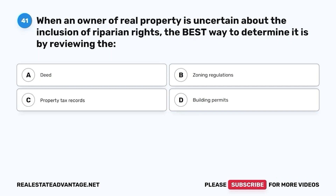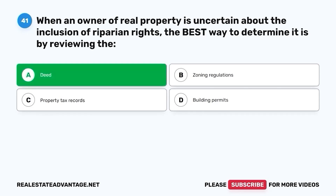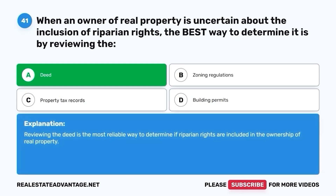Question 41. When an owner of real property is uncertain about the inclusion of riparian rights, the best way to determine it is by reviewing the: A. Deed. B. Zoning regulations. C. Property tax records. D. Building permits. The correct answer is A. Deed. Reviewing the deed is the most reliable way to determine if riparian rights are included in the ownership of real property.